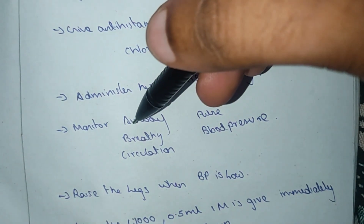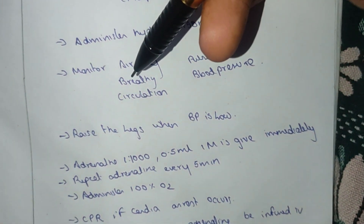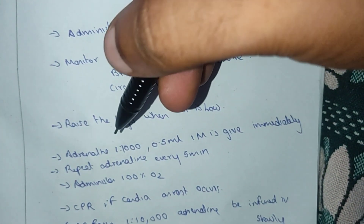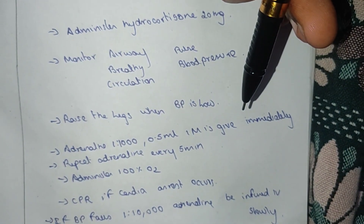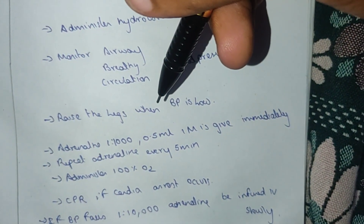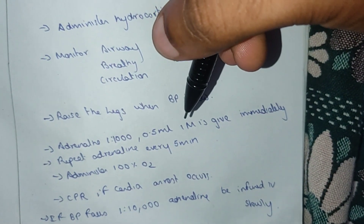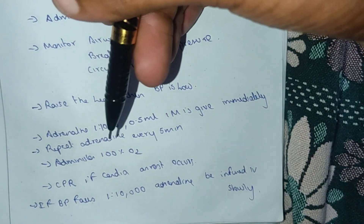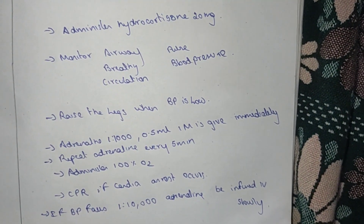Monitor pulse and blood pressure. If blood pressure is low, administer adrenaline 1:10,000 — 0.5 ml intramuscularly immediately. Adrenaline ratio 1:1,000, 0.5 ml, repeated every 5 minutes while awaiting ambulance. Administer 100% oxygen.